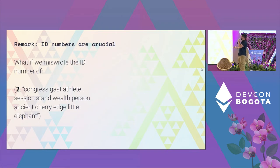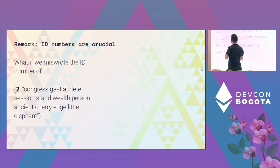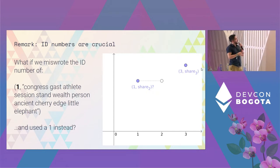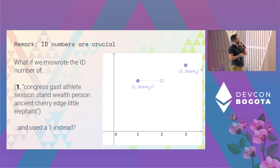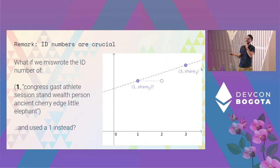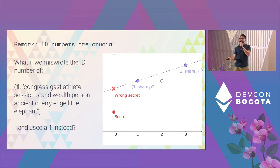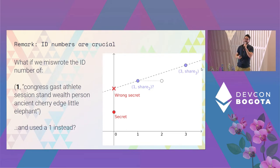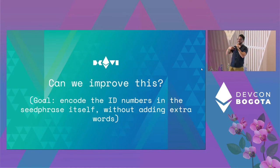What would happen if you mislabeled one of the ID numbers? If you have the second share but accidentally label it with a one instead of a two, the geometry changes — that point gets shifted to the left. When you try to reconstruct, you get a different straight line and the wrong secret. This may not sound like a big deal, but if you're dealing with many shares at a time — say 12 points — and the labels get lost, solving for all possible permutations to find the correct one is quite a nuisance.